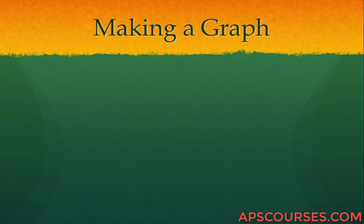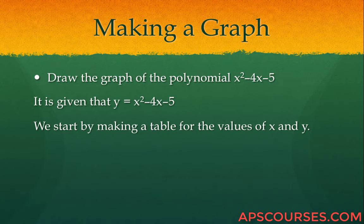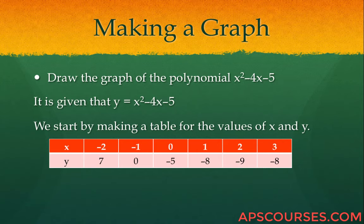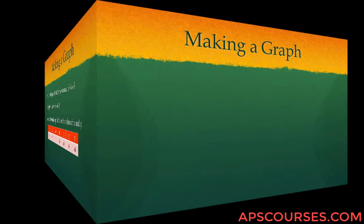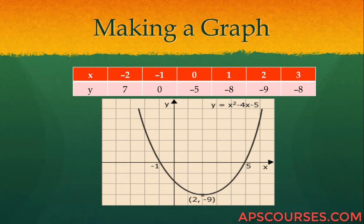Let us make a graph. Draw the graph of the polynomial x squared minus 4x minus 5. It is given that y equals x squared minus 4x minus 5. Make a table for the values of x and y. Assume values for x: minus 2, minus 1, 0, 1, 2, 3. You will get the values of y accordingly. Plot these values on your coordinate plane and you get your graph.